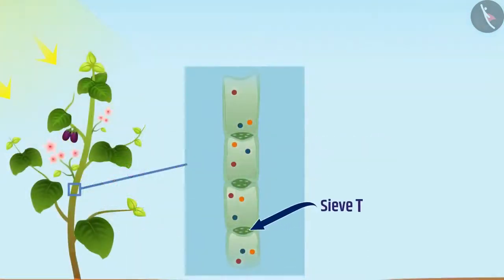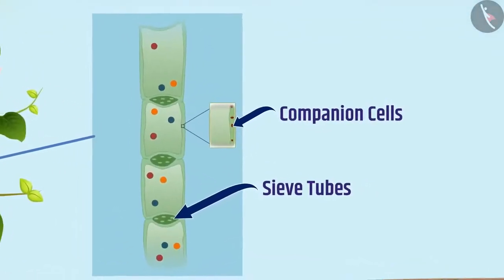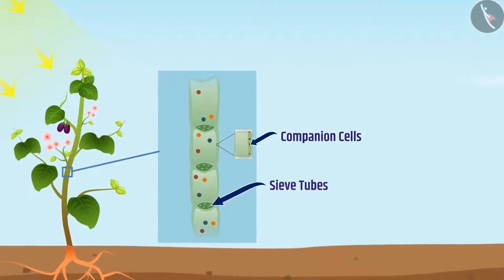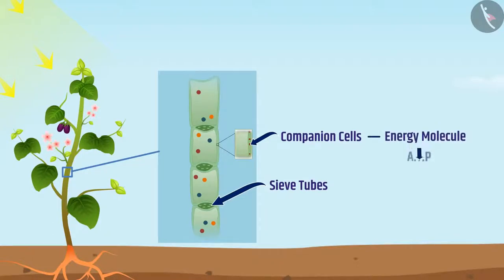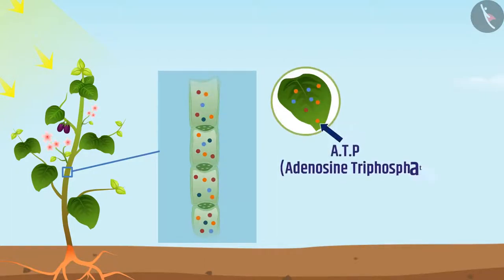Phloem consists of sieve tubes and companion cells. The transportation of soluble products takes place in the sieve tubes with the help of adjacent companion cells. In plants, the transport of food takes place actively with the help of an energy molecule called ATP present in the companion cells. The soluble products produced in the leaves enter the phloem by using ATP — that is adenosine triphosphate — due to which the concentration of soluble products increases in the phloem.